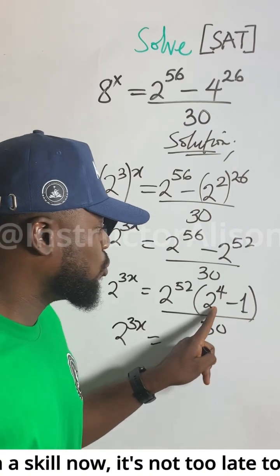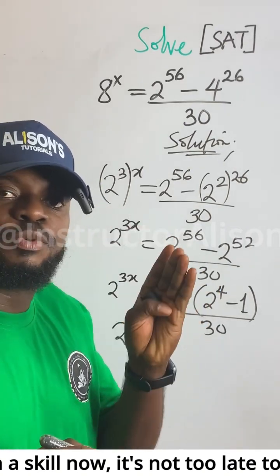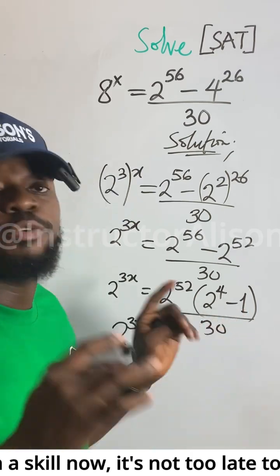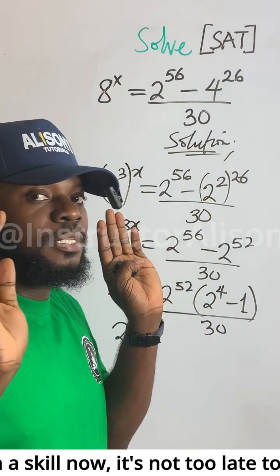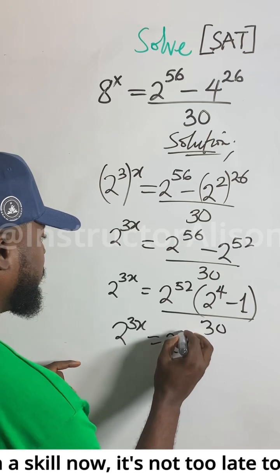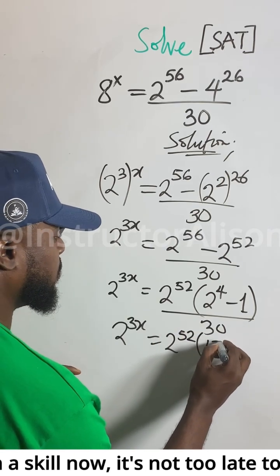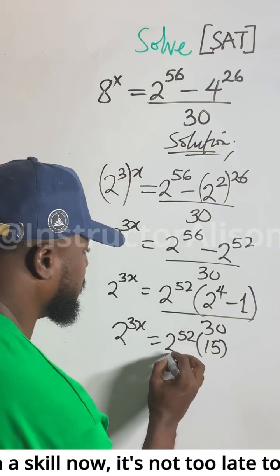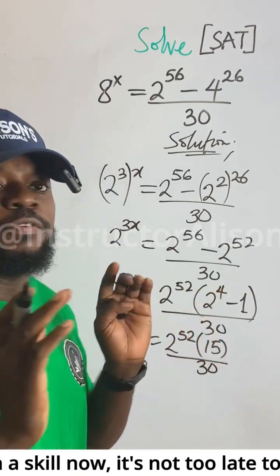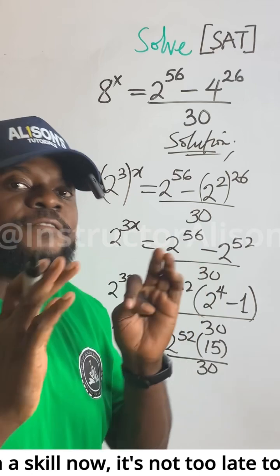Equal to 2 to the power of 4, and 2 times 2 times 2 times 2 will give you 16. 16 minus 1 will give you 15. So we get 2 to the power of 52 into 15. How do we get this 15? 2 to the power of 4 will give you 16, and 16 minus 1 gives us 15.